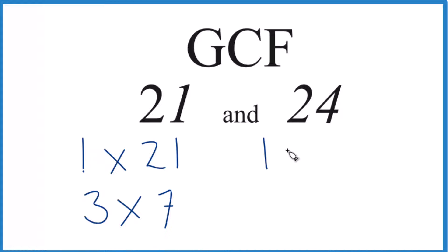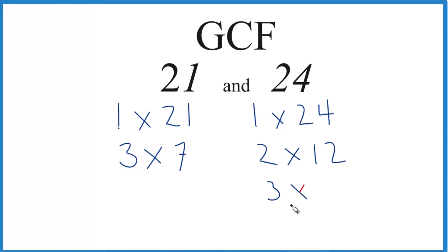For 24, we have 1 times 24, 2 times 12 equals 24, 3 times 8 is 24, and 4 times 6, that's 24. So these are the factors for 24.